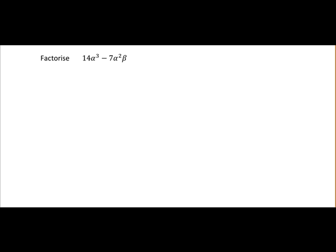This is a little trickier because we have indices involved in this particular one. So we have 14a cubed minus 7a squared beta. Just a word about the alpha cubed. Alpha cubed is equal to alpha multiplied by alpha multiplied by alpha. To shorten that they call it alpha cubed. Same with alpha squared, that's equal to alpha multiplied by alpha.